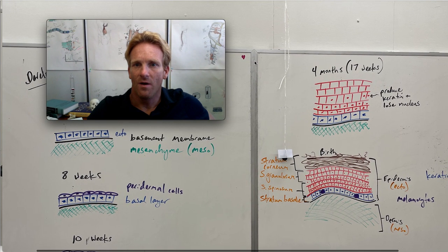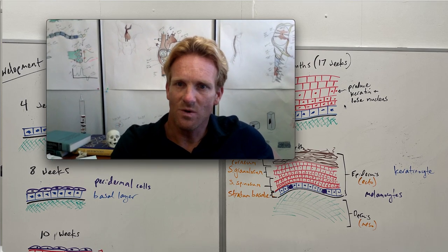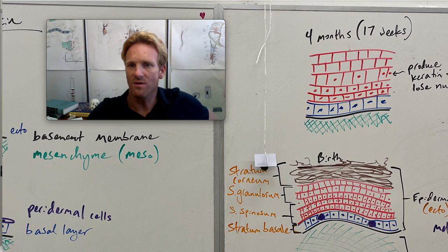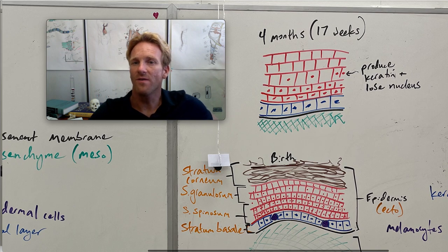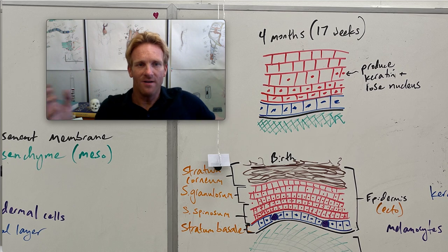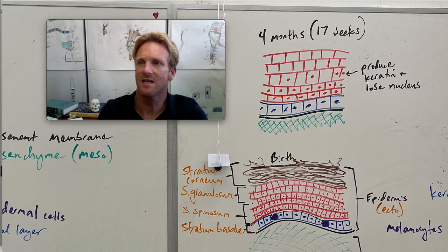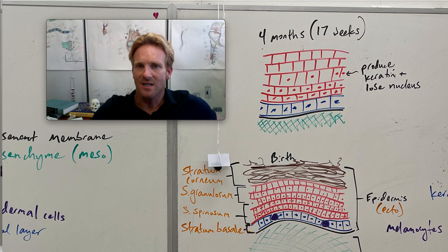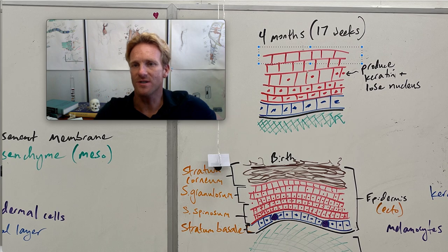Now if we jump over by seventeen weeks, these cells in this intermediate layer, they're going to start a new process in which they start producing keratin and they lose their nucleus. So these red cells that make up this intermediate layer, about four months after fertilization, they're producing keratin now. Keratin is a protein that's going to give the future epidermis more strength. It's not as strong as something like collagen, but it is useful because it gives the skin a little bit more strength. Now once these cells produce keratin, they're going to lose the nucleus. That's why these cells near the surface of the developing epidermis, they don't have this little red dot which is the nucleus. They've already produced the keratin, they've lost that nucleus.